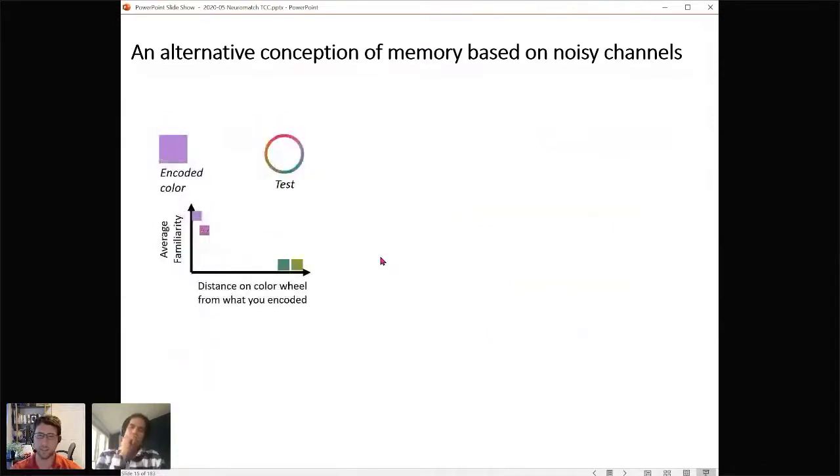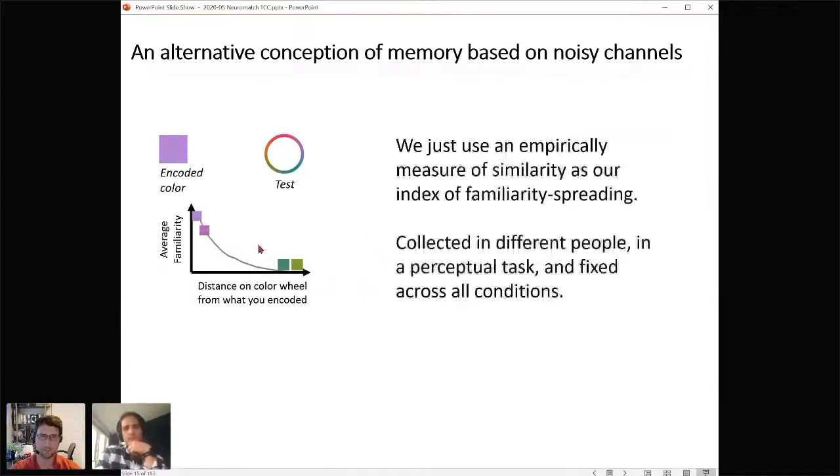If you wanted to scale this up to thinking about that continuous report task, you can just think of this as a 360 alternative forced choice. The question is just how much boost in familiarity does each color get if you saw purple. What does this function look like? In fact it seems to look something like this. This is effectively the function of how much boost in familiarity you get from having seen this purple color for all the other colors in the wheel. We just measure this empirically in a totally separate set of subjects in a perceptual task. This is just a perceptual judgment of this color wheel, nothing to do with memory at all. This is just how far familiarity spreads in this color wheel as indexed by similarity.